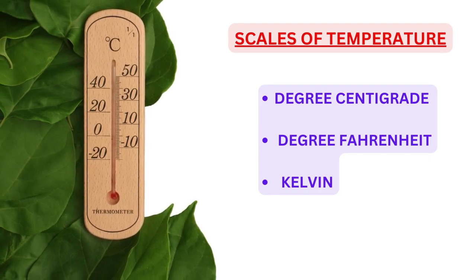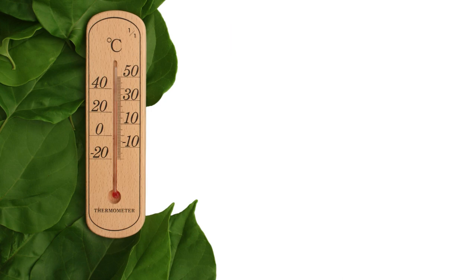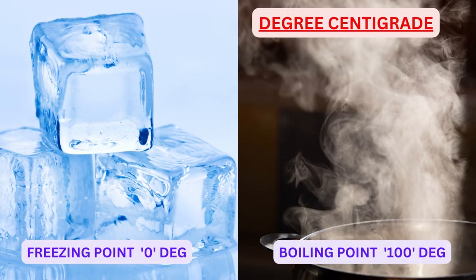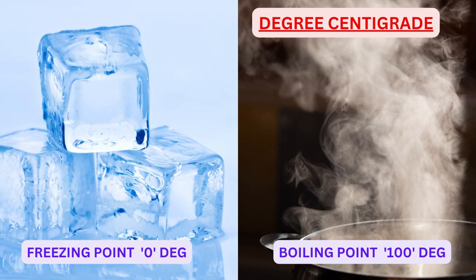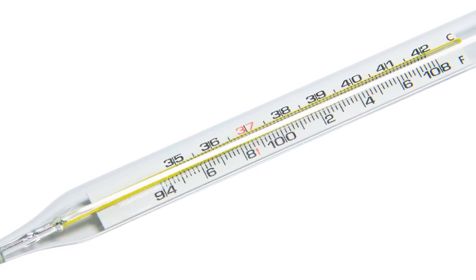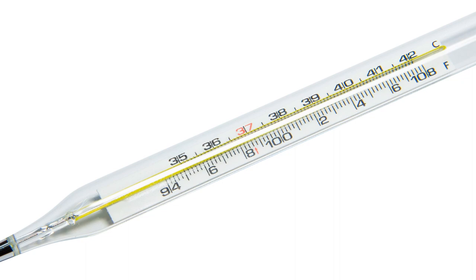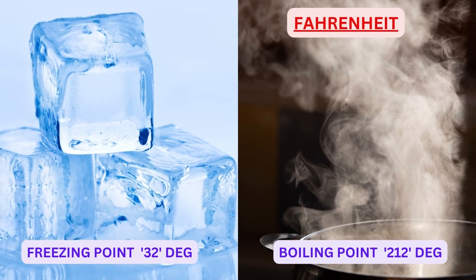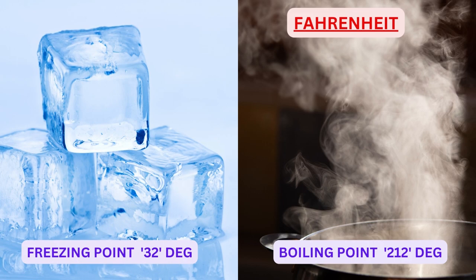The three scales are degree centigrade, degree Fahrenheit, or Kelvin. Degree centigrade you know very well — water freezes at 0 degree centigrade and boils at 100 degree centigrade. In Fahrenheit scale, water freezes at 32 degree Fahrenheit and boils at 212 degree Fahrenheit. In your lifetime you must have sometime had fever, and fever is measured by mercury thermometer in Fahrenheit.